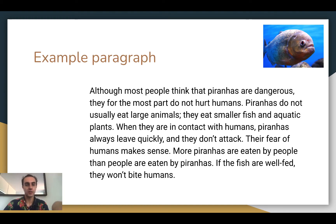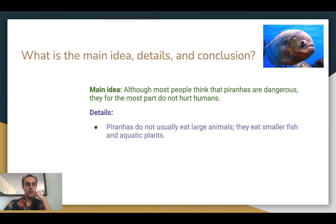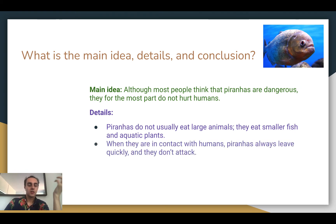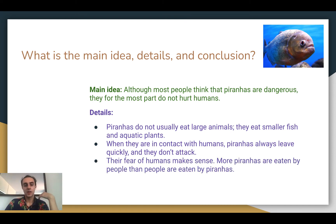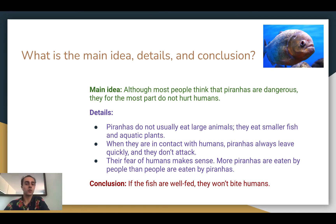The main idea is that although most people think piranhas are dangerous, they for the most part don't hurt humans — that's the topic sentence. Some details the author uses to support that: piranhas don't usually eat large animals, they eat smaller fish — one reason they don't hurt humans. When in contact with humans, piranhas always leave — they don't attack. More piranhas are eaten by people than people are eaten by piranhas. And the conclusion is that if the fish are well fed, they won't bite humans — as long as they have enough food, they won't hurt humans.